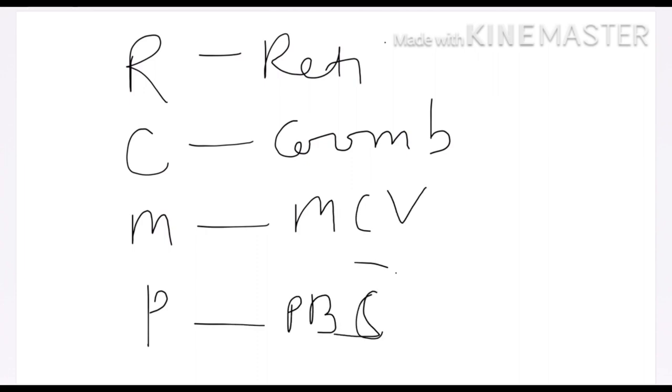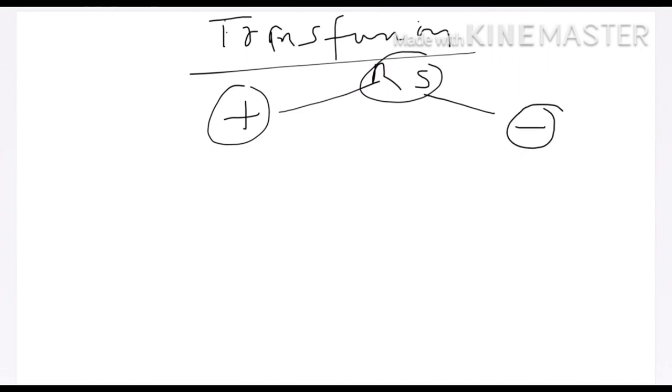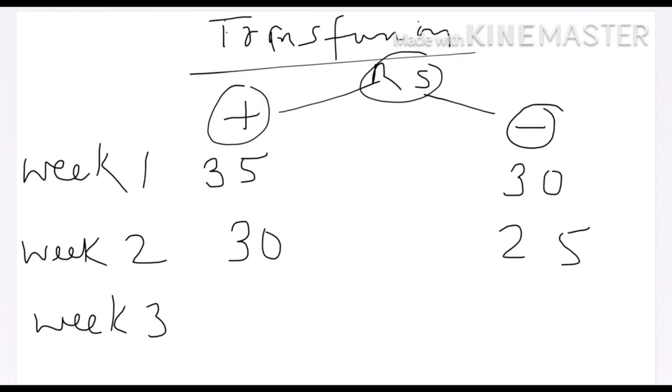Now we have the transfusion protocol. This is also taken from Nelson, recent 21st edition. It is divided on the basis of respiratory support: if respiratory support required, respiratory support not required, and accordingly week one, hematocrit less than 35 to give transfusion. Week one, week two, week three: just here 30, 25, you can easily put. This is 25 and here is 23. Here respiratory support is absent, respiratory support is present. You can easily remember it.